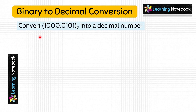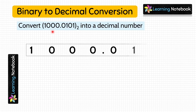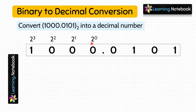Now let's do the last question: convert binary number 100.0101 into a decimal number. First, let's write the place values of all the digits. For the integer part: 2⁰, 2¹, 2². For the fractional part: 2⁻¹, 2⁻², 2⁻³, and 2⁻⁴.